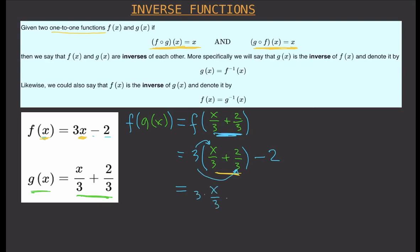We can cancel the 3s, so we get x + 2 − 2. The +2 and −2 cancel, giving us x. So f(g(x)) = x. But we still have to evaluate g(f(x)).